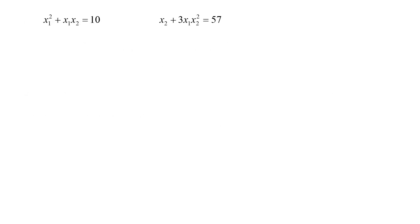We will use fsolve to find the solution to a pair of nonlinear equations. x1 squared plus x1 x2 equals 10, and x2 plus 3 x1 x2 squared equals 57.